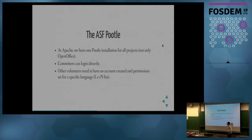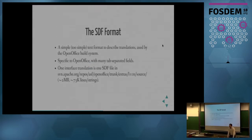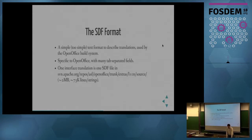In the case of the Apache Software Foundation, we have one PUTL installation for all projects. OpenOffice is only one of hundreds of projects at Apache. Committers can log in directly from any project; other volunteers need an account created, but this is the only overhead. Behind the user-facing PUTL interface, there is the obscure SDF format, which is very simple — just a set of fields separated by TABs. That's fine with three columns of data, but when you have dozens of columns, it is just impractical.